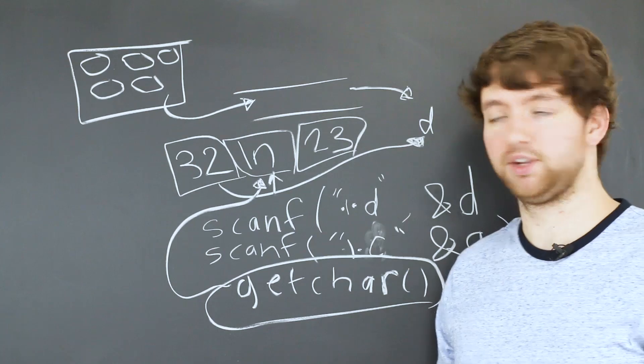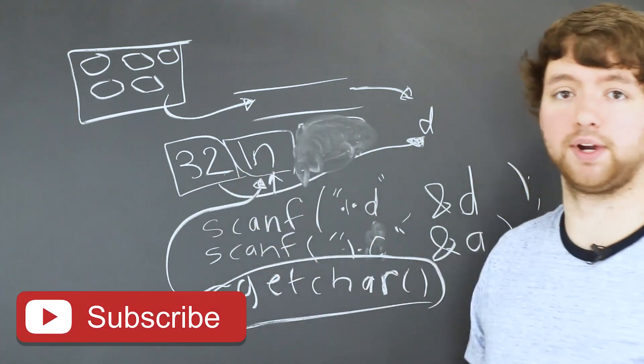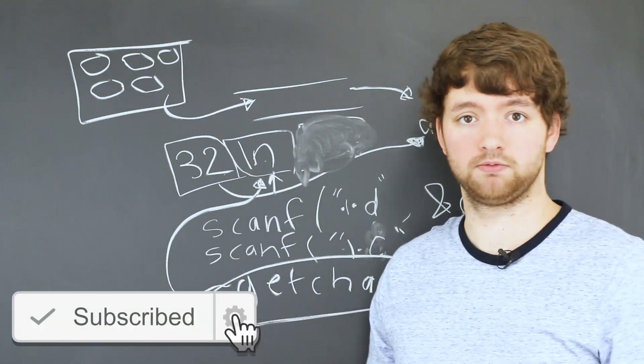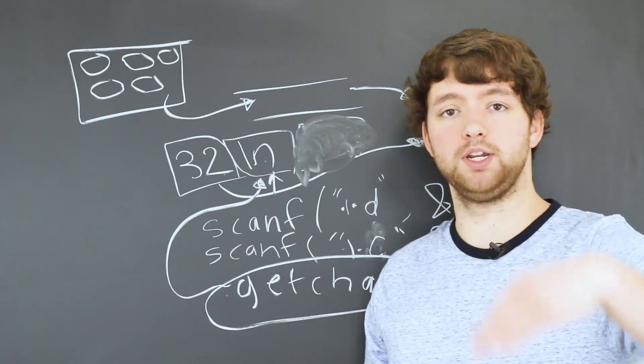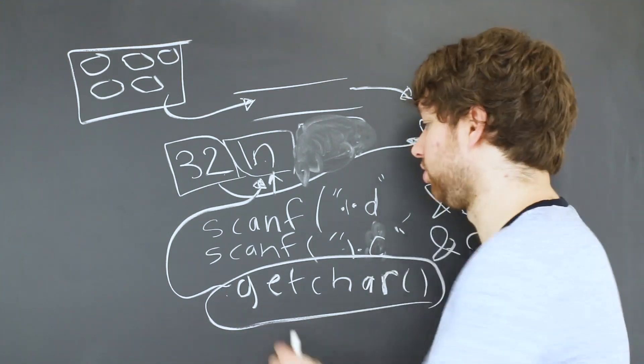And what this is going to do is it's going to just get the one character from the input stream. So assume we haven't entered this in yet, we just put in 32 and then press enter, and then we run getchar. Well, it's going to grab that newline.